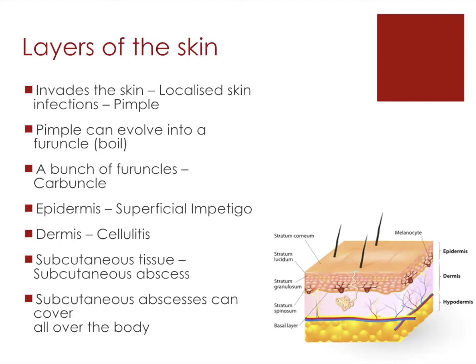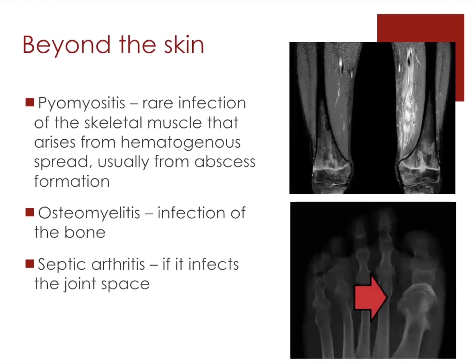If it infects the dermis, it can cause cellulitis and begin to spread along the skin, leading to systemic problems. If it infects the subcutaneous tissue, it can cause a subcutaneous abscess. It's important to note that these abscesses can develop within various organs like the liver, kidney, spleen, or brain. If the infection is overlying a muscle, it can spread into the muscle and cause pyomyositis, a rare infection of skeletal muscle, usually resulting from abscess formation. If it infects the bone, it can cause osteomyelitis.